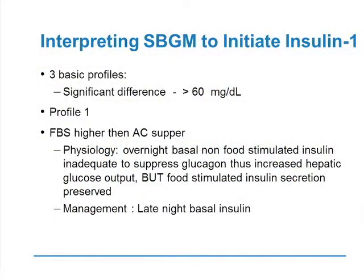When you need to start a patient on insulin, self-blood glucose monitoring tells you everything. Profile one: the fasting sugar is higher than the supper sugar — she wakes up at 240 but by supper she's down to 160. The pathophysiology is that overnight, when she's not eating, she cannot produce enough insulin to maintain control of the liver and control hepatic glucose output. However, once she eats, the beta cell can produce enough insulin and sugars fall through the day. What she needs is a nighttime insulin to control hepatic glucose output — a basal insulin starting at night.